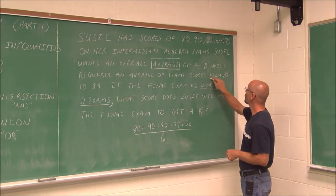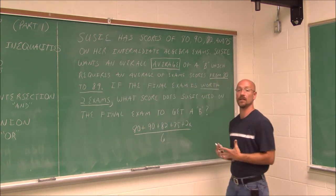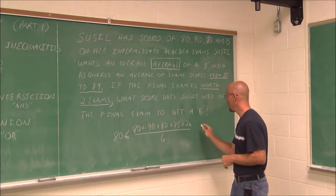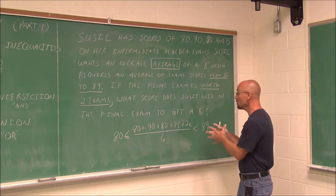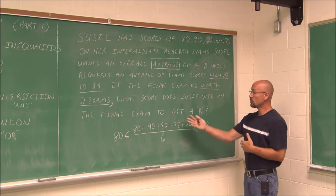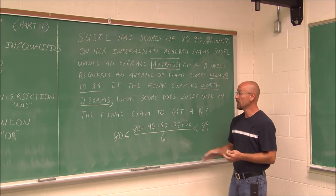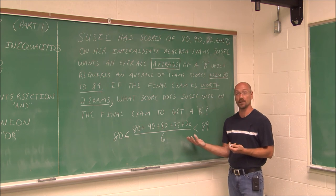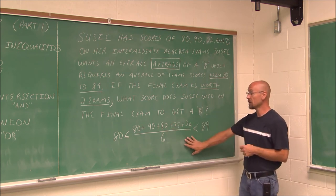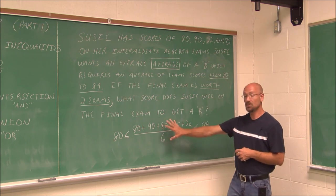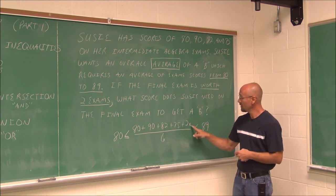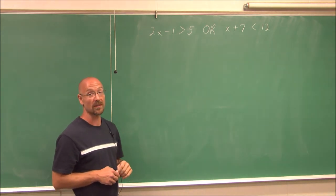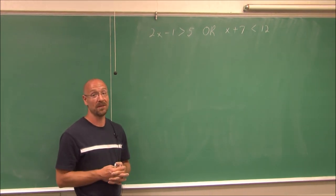Recalling that a B requires scores from 80 to 89: 80 is included (bracket) and it goes up to 89 but does not include 90, so we use a parenthesis at 89. This becomes our compound inequality. We can sum up the values and solve this just as a double inequality — what you do to one side, you do to all sides. I'll stop here and give you the opportunity to crunch the numbers, simplify, and find what x — her final exam score — needs to be. This has been Section 1.7, Part 2 of 3. Stay tuned for the next video, thank you for watching.